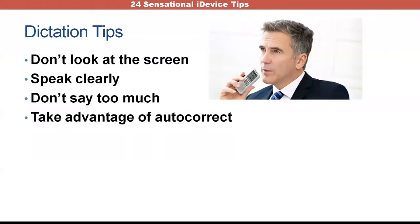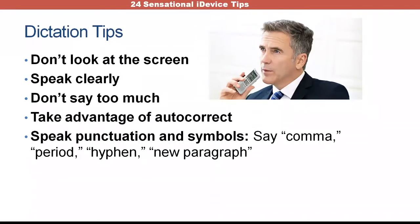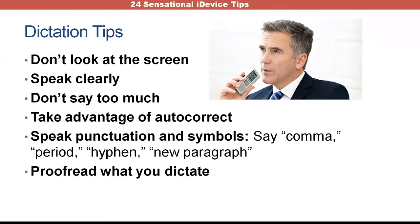Take advantage of autocorrect. One reason dictation lags behind is because it wants to know context — for instance, it won't know which 'weather' you mean until you mention the sun or rain. If you want to add punctuation, you have to say it — say the word 'comma,' 'period,' 'hyphen,' or most importantly 'new paragraph.' You often have to say 'new paragraph' twice to get extra space between paragraphs. And of course, everybody needs to proofread what they dictate — it often is not perfect the first time.